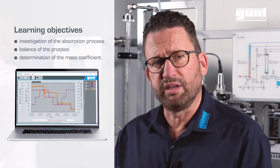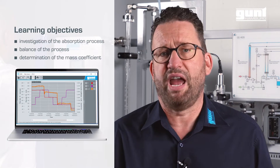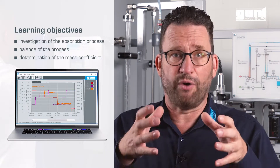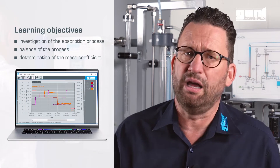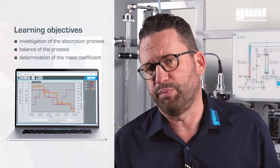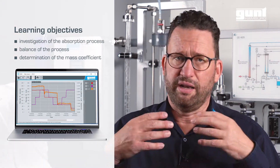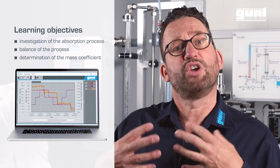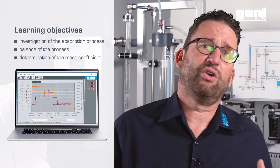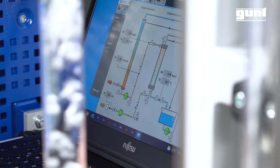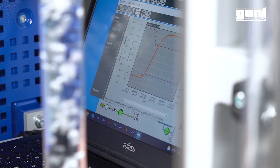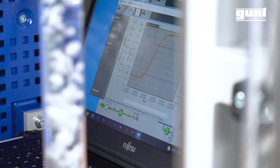Firstly, we can study the absorption process during the separation of oxygen from an air flow in a falling film column. On the other hand, it is possible to analyze the mass balance of the process. Another important learning objective is the determination of the mass transfer coefficient. The innovative software support facilitates control of the process and measurement data can easily be recorded.